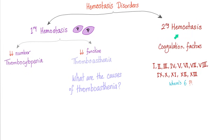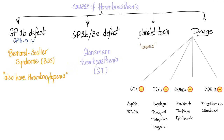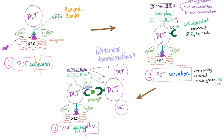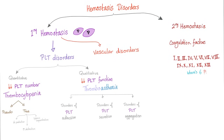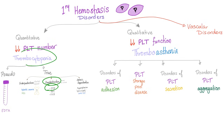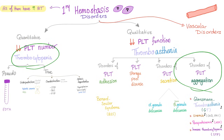Here are the causes of hemostasis disorders. Primary problems can be in the platelet or vessel wall: thrombocytopenia or thrombasthenia. Causes of thrombasthenia include GP1B defect — as in Bernard-Soulier — and GP2B3A defect, as in Glanzmann thrombasthenia and ITP, as well as platelet toxins or drugs, paraproteins in multiple myeloma, or uremia in renal failure. GP1B is responsible for platelet adhesion; GP2B3A is responsible for aggregation. ITP involves IgG antibodies against GP2B3A and is both a true thrombocytopenia and a disorder of platelet aggregation. The platelets may be hyper-functioning — they're trying their best.